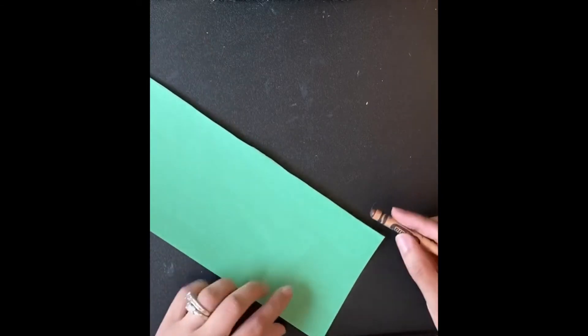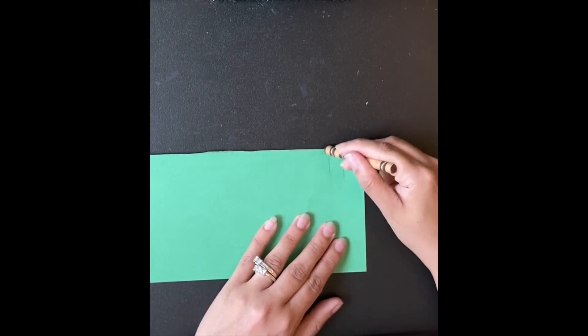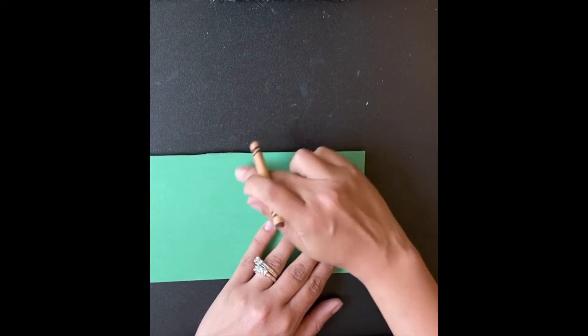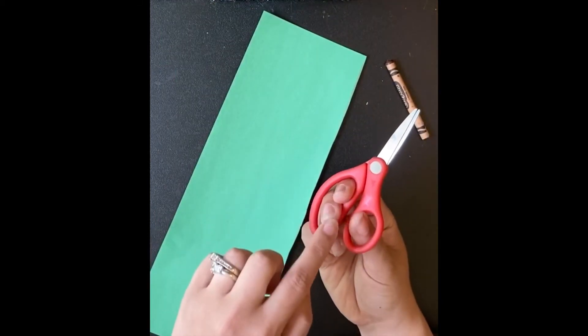So next you need to make grass on your paper. You can use your crayon or marker to make some lines on the top of the paper so you know where you need to cut, or if you prefer you can just use your scissors to freehand what you need to do.